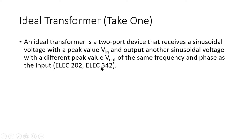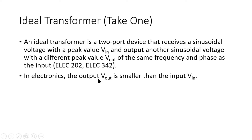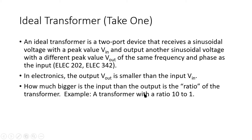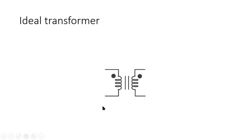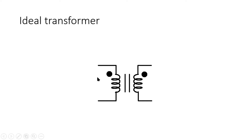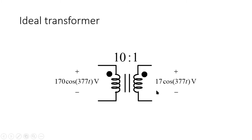We'll study this device further in ELEC 202 next term and in ELEC 342 the following year. In electronics, the output V_out is usually smaller than the input V_in by the transformer's ratio — a number that tells us how much smaller the output will be than the input. For example, a transformer with a ratio of 10 to 1 outputs a voltage wave with an amplitude only one tenth of the input. So if we input a sinusoid with amplitude 170 V, we get a sinusoid with amplitude 17 V at the same frequency.